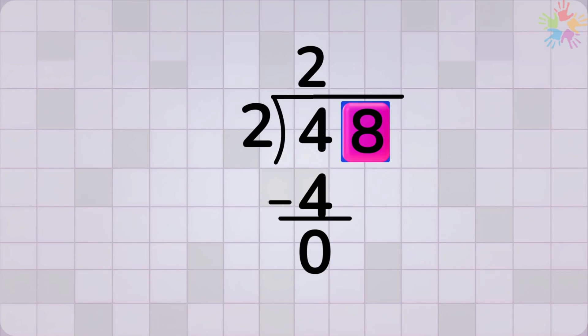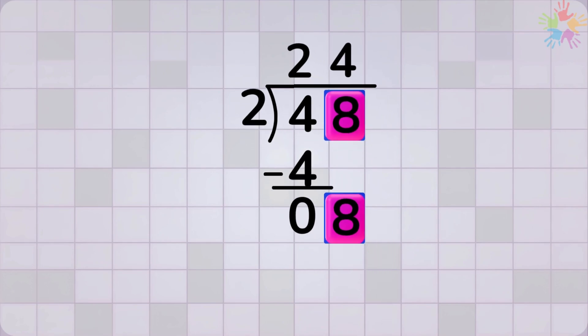We ask, how many times does 2 go into 8? The answer is 4. Because 2 times 4 equals 8. Subtract again. 8 minus 8 equals 0.